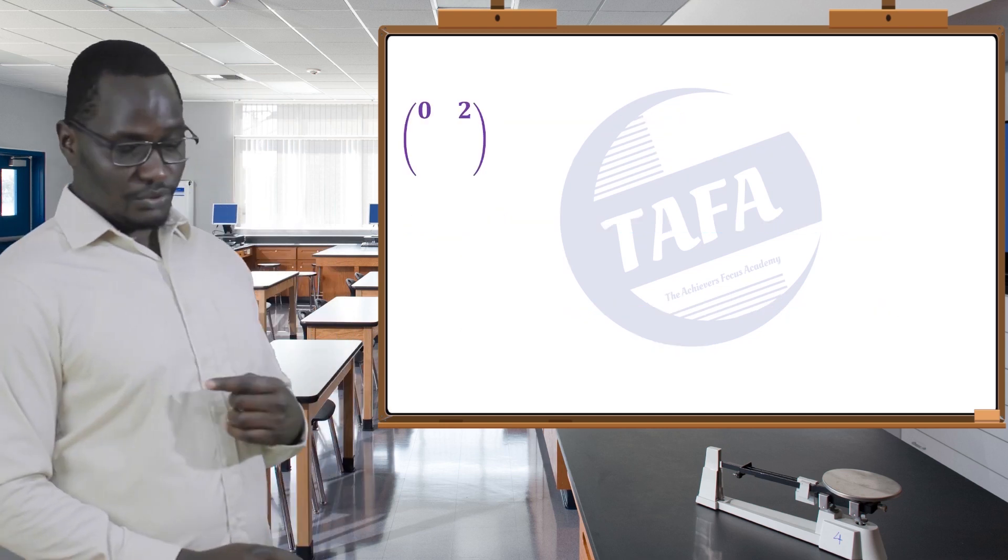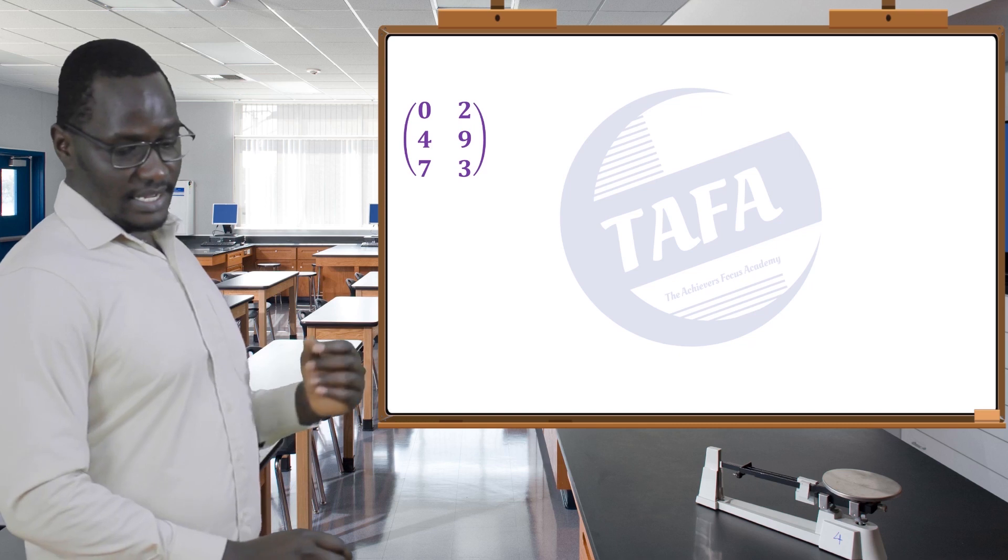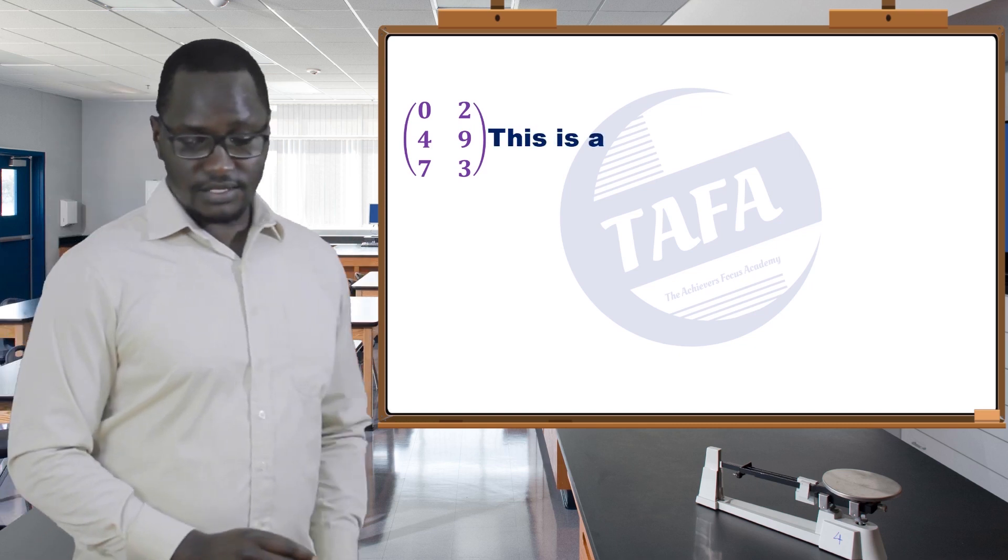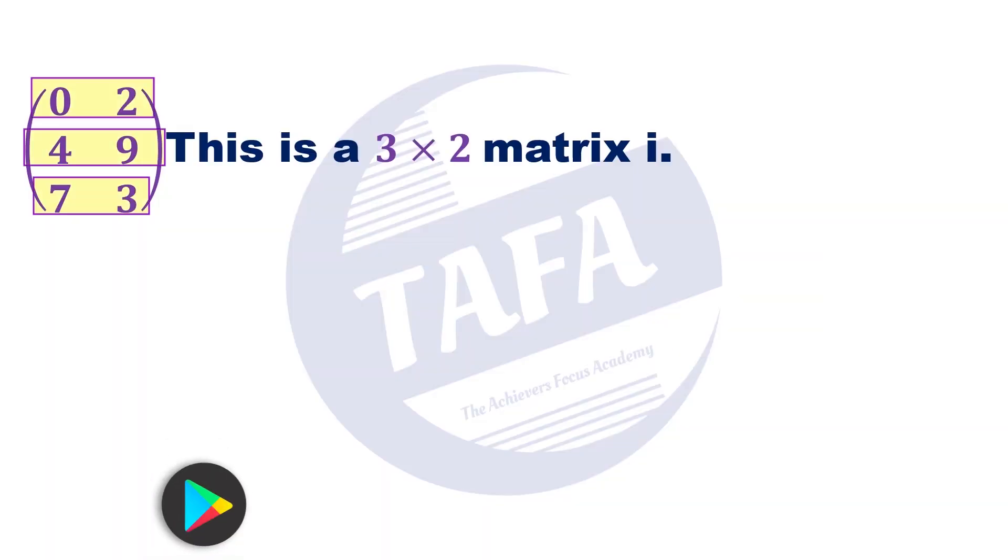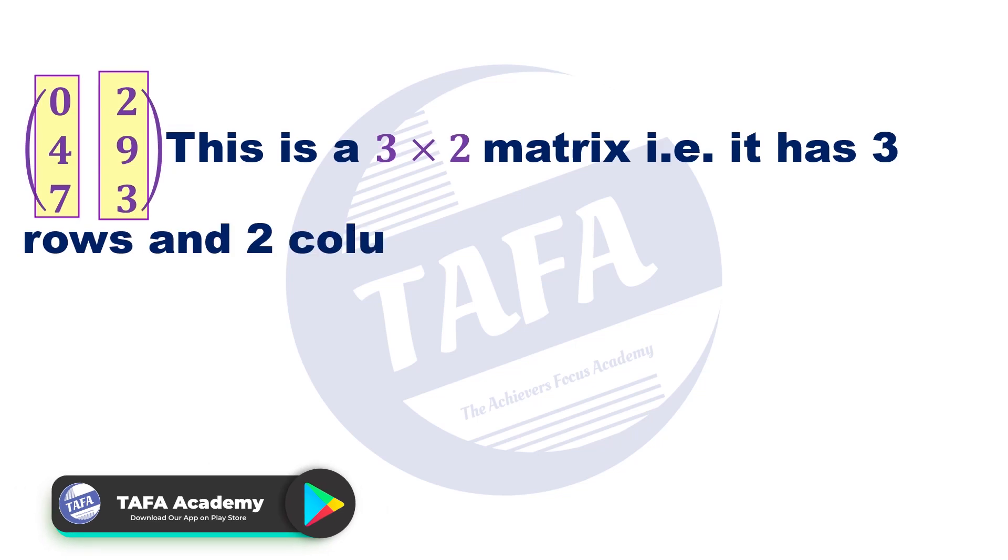The next one is 0, 2, 4, 9, 7, 3. This matrix has 3 rows and 2 columns. This is read as 3 by 2 or 3 times 2.